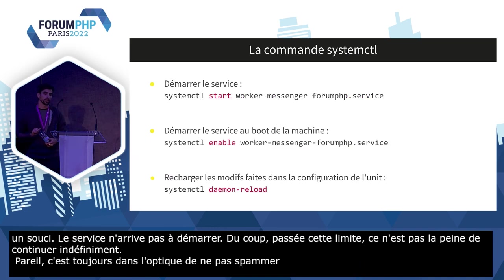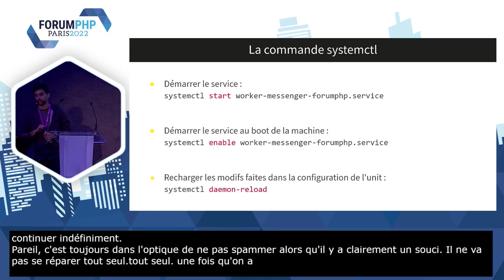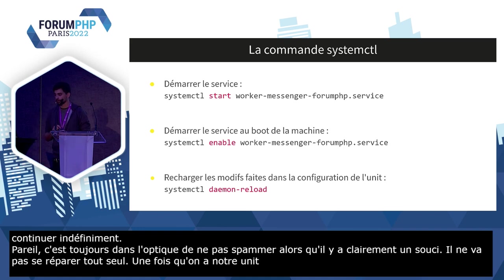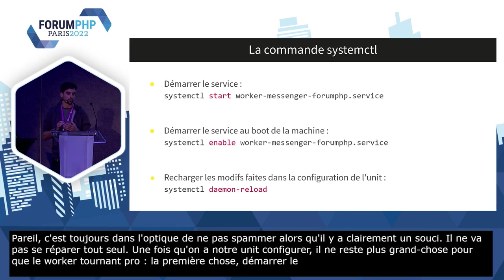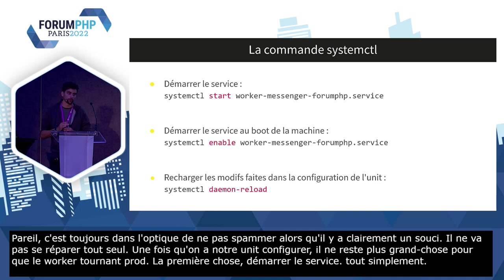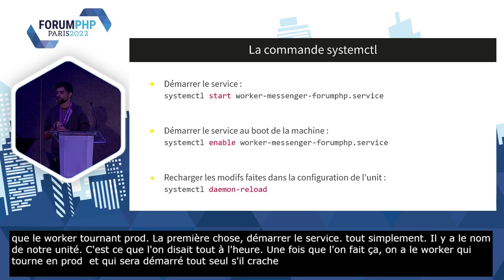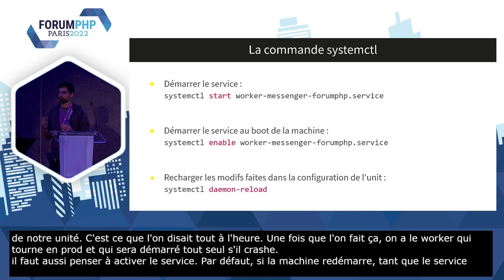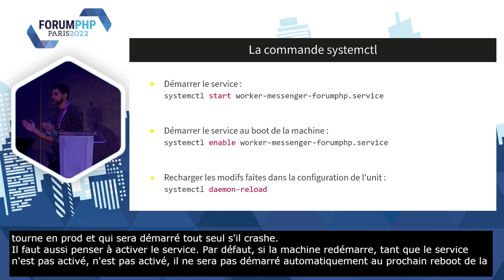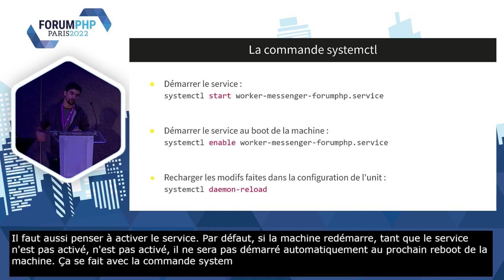Une fois l'unit configurée, il ne reste plus grand-chose pour avoir notre worker qui tourne en prod. La première étape, c'est de démarrer le service avec la commande systemctl start et le nom de notre unit : worker-messenger-forum-php.service. Une fois qu'on fait ça, le worker tourne en prod et sera redémarré automatiquement s'il crache. Il faut aussi penser à activer le service avec systemctl enable, sinon si la machine redémarre, le service ne sera pas démarré automatiquement au prochain reboot.